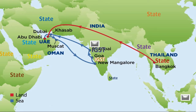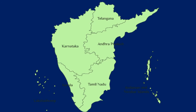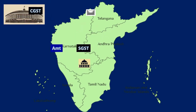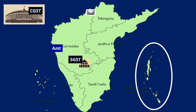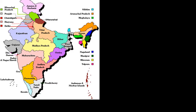If the supply takes place within a particular state, the applicable GST rate is split into CGST and SGST. The collected CGST component of the tax goes to the central government and SGST goes to the state government where the consumption of the product takes place. In the case of a transaction within a union territory, in place of SGST, UTGST is applied, and both CGST and UTGST go to the central government because in India, UTs with no legislature are administered by the central government. UTs with legislature, however, are considered as states, and therefore SGST is applicable.